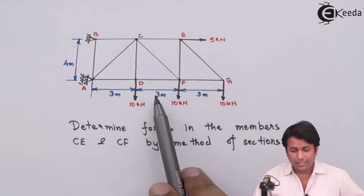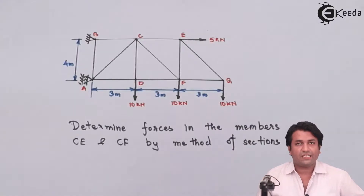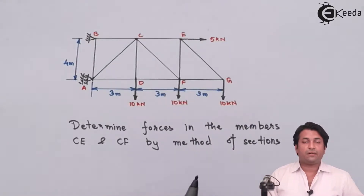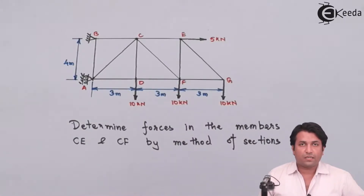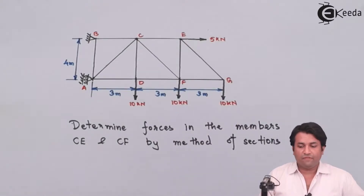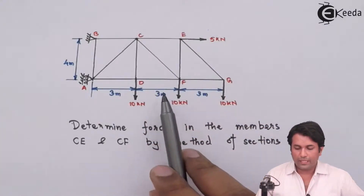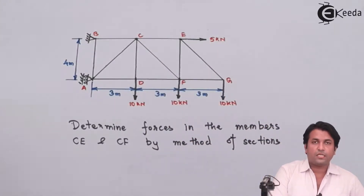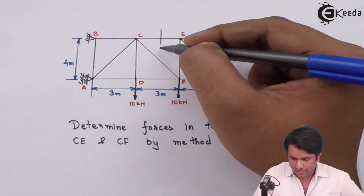I can draw a section plane such that I am cutting three members, including BF. I need to cut the truss into two complete parts — I cannot cut just a part of the truss. I need to divide the truss into two different parts, so if I draw a section plane here, I am dividing the truss into two parts.